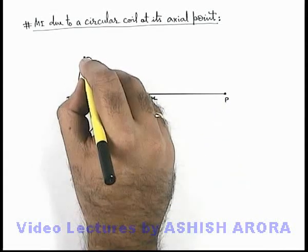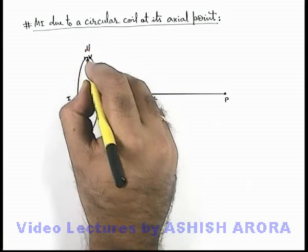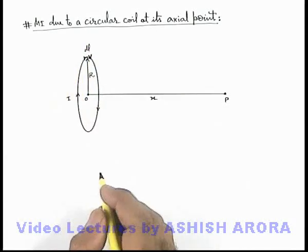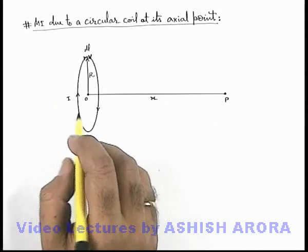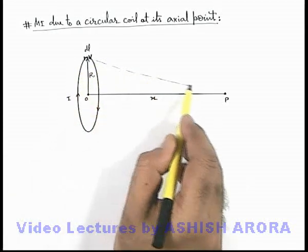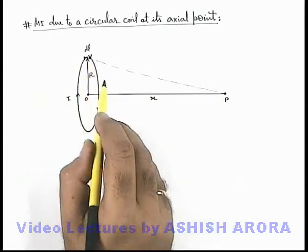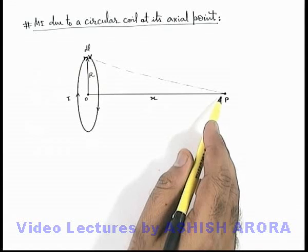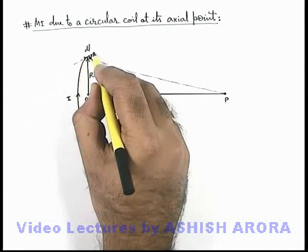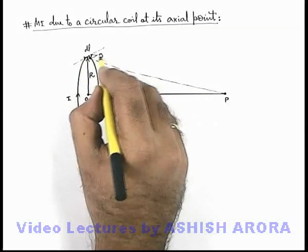In this situation we consider a small element of length dl at the top of the coil in which a current i is flowing. The magnetic induction at point p can be obtained by using the Biot-Savart law. The angle which this tangential length is making with the line joining point p is 90 degrees.